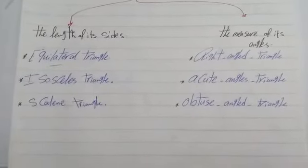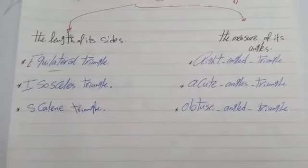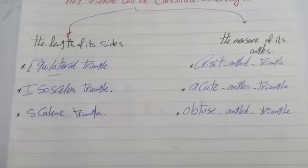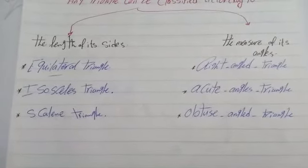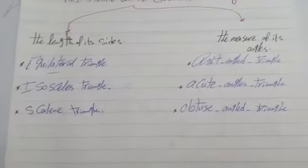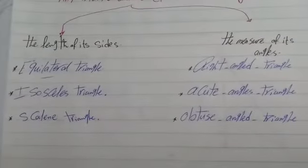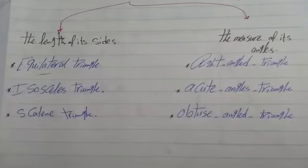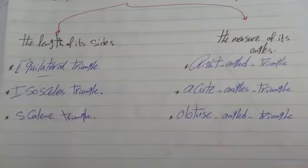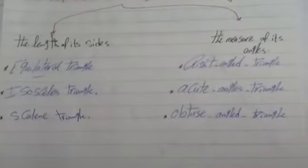An equilateral triangle has three equal sides and three equal angles — each angle is 60 degrees. An isosceles triangle has two equal sides and two equal angles. A scalene triangle has three different sides and also three different angles.